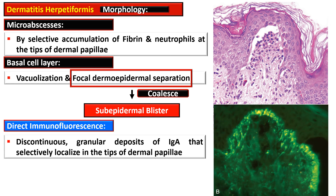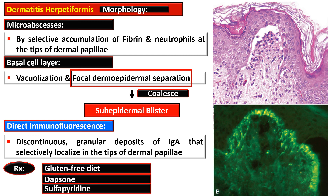Direct immunofluorescence of these areas shows discontinuous granular deposits of IgA localized at the tip of the dermal papillae. The treatment of dermatitis herpetiformis is a gluten-free diet, dapsone, and sulfapyridine.